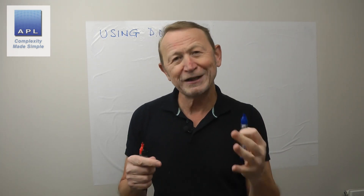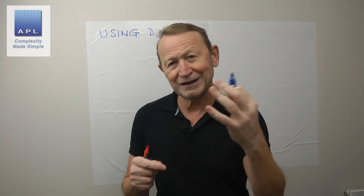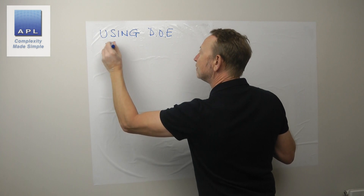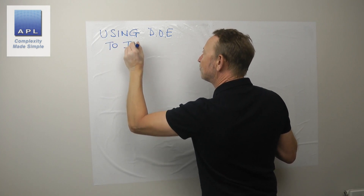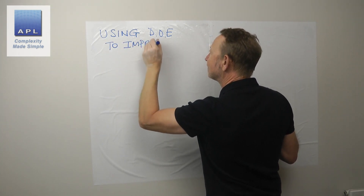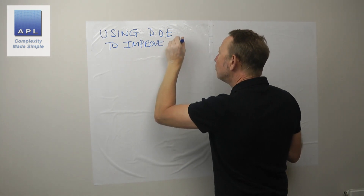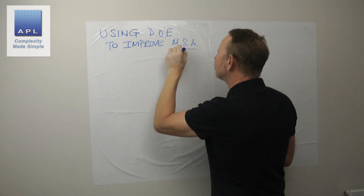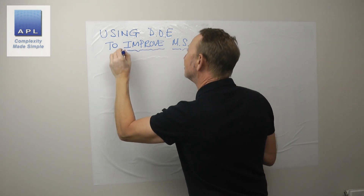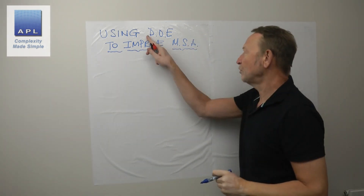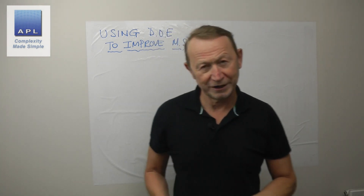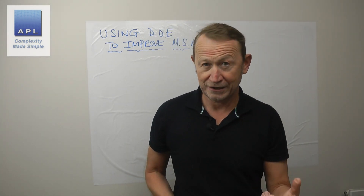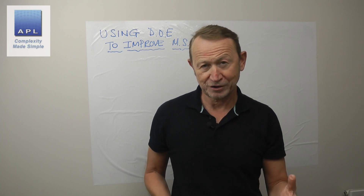We don't really want to do those things unless we have to. So using a DOE to improve MSA — in order to prove that the particular things you want to control are actually needed — you can do a DOE on the variables in your measurement system.